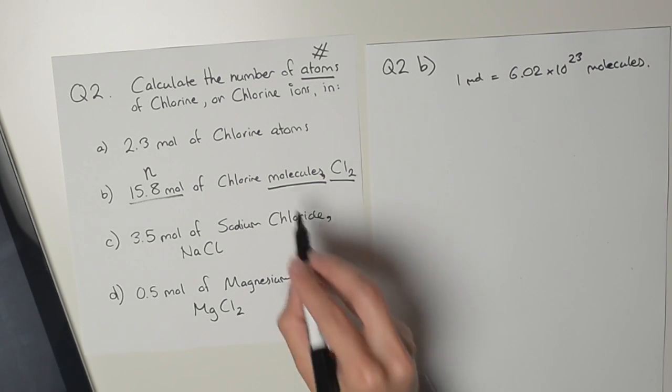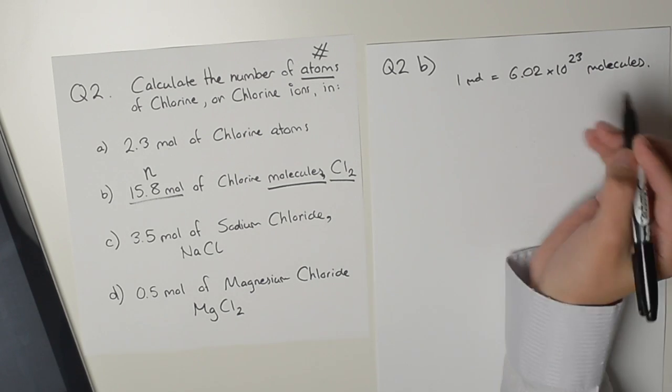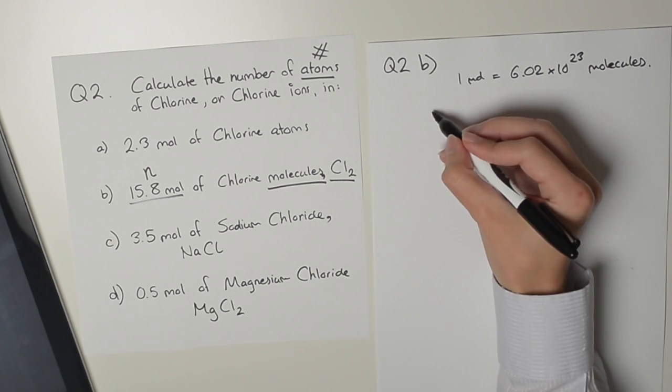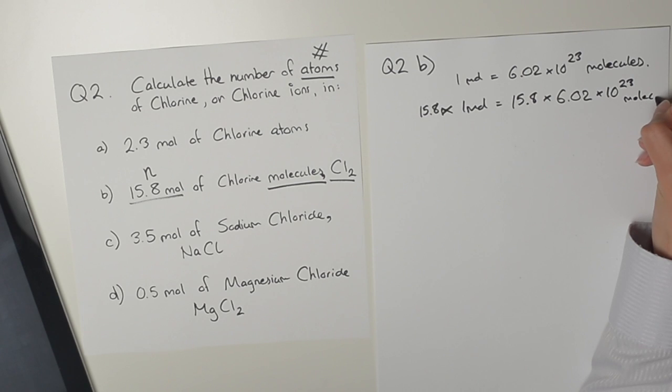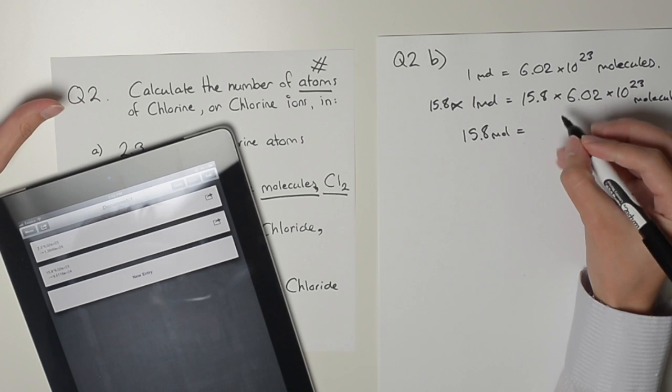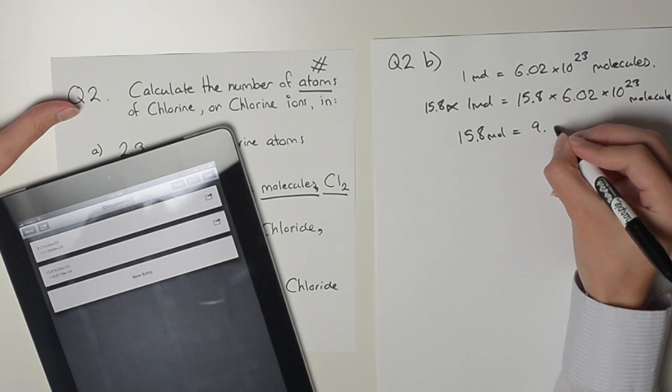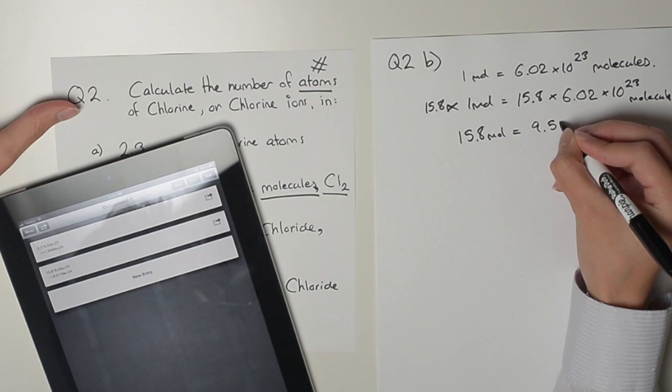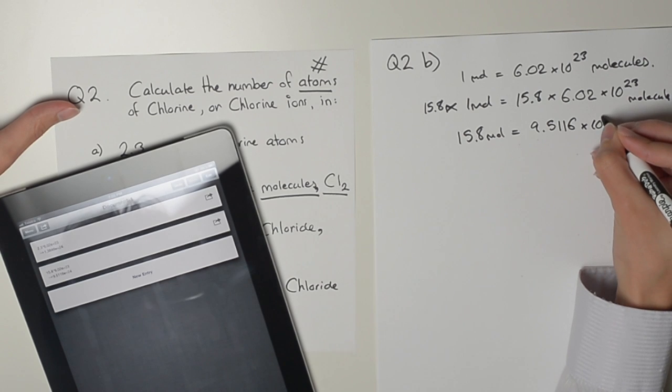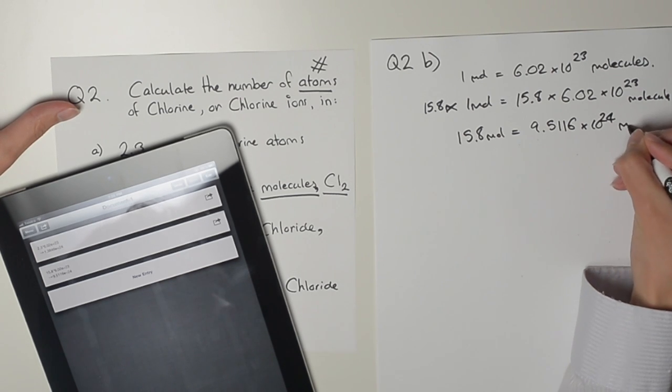This is a trick, okay? Watch out for this. So that's the definition. We need to scale this up by 15.8 times. And we get a result of 9.5116 times 10 to the power of 24 molecules.